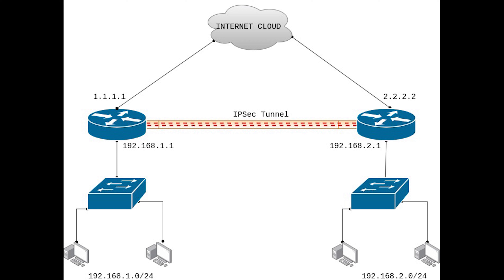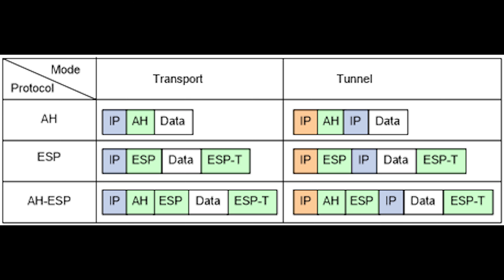IPSec tunnels are used to provide a secure connection between two devices. IPSec tunnels encrypt all traffic that passes through them, making them much more secure than GRE tunnels. However, they can only be used to connect devices that use the same protocol. IP Security uses two distinct protocols: Authentication Header (AH) and Encapsulating Security Payload (ESP). The Authentication Header protocol provides data integrity, data origin authentication, and an optional replay protection service. Data integrity is ensured by a message digest generated by an algorithm such as SHA.